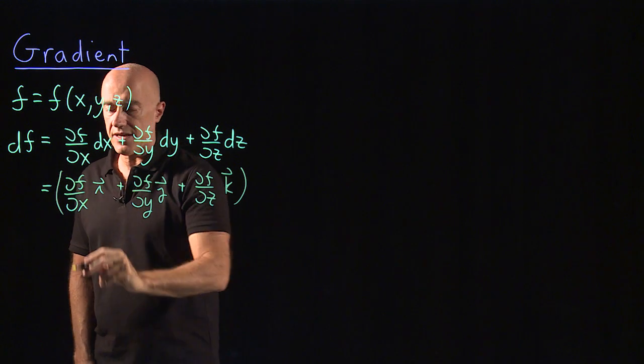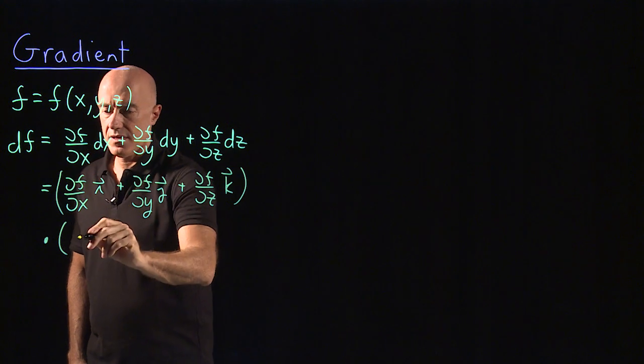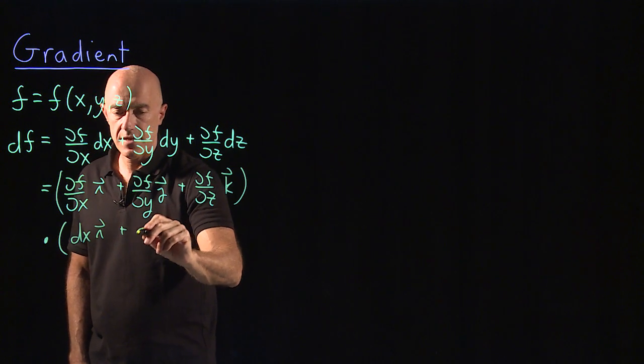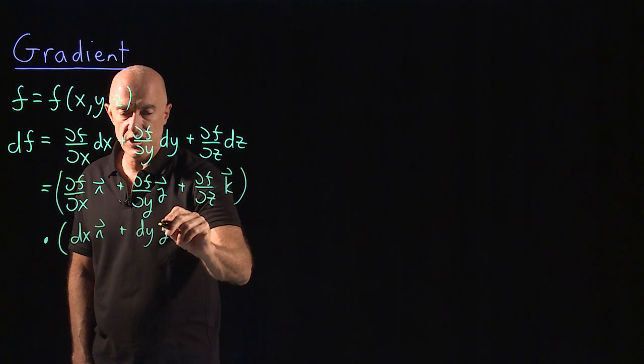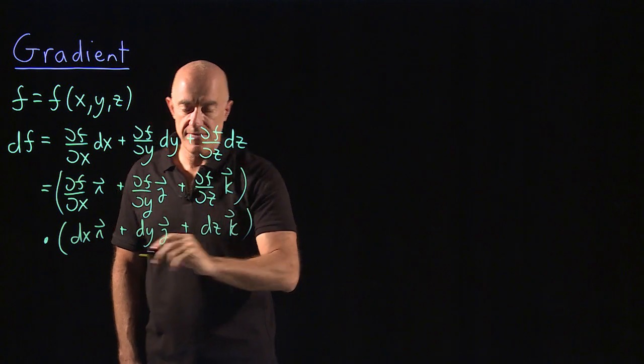This vector dotted into dx times the i unit vector, plus dy times the j unit vector, plus dz times the k unit vector.